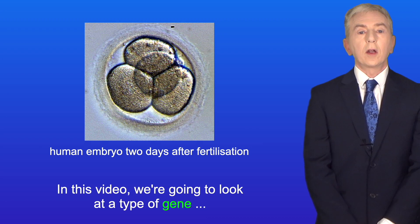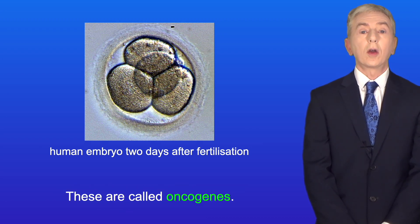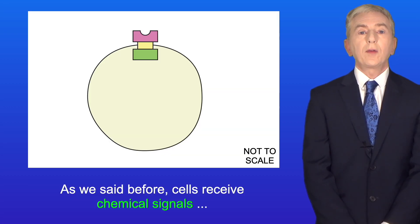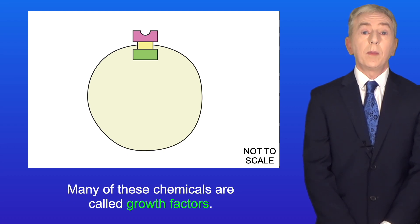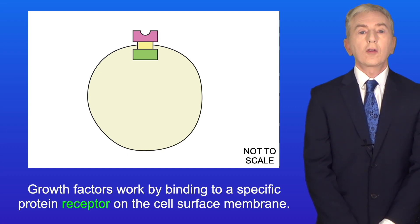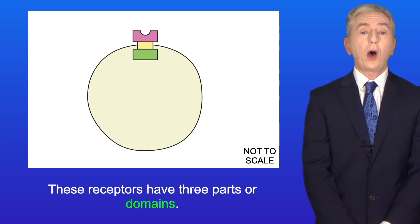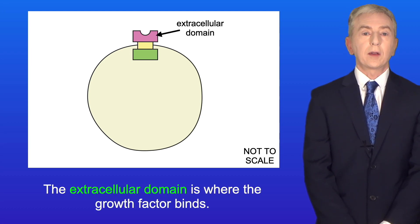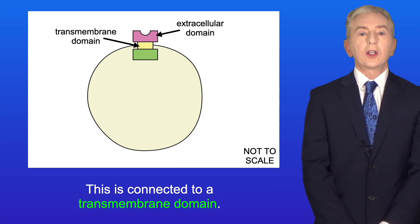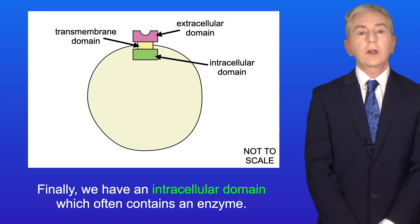In this video, we're going to look at a type of gene that plays a critical role in the development of cancer — these are called oncogenes. Cells receive chemical signals telling them to undergo mitosis; many of these chemicals are called growth factors. Growth factors work by binding to a specific protein receptor on the cell surface membrane. These receptors have three parts, or domains: the extracellular domain where the growth factor binds, a transmembrane domain, and finally an intracellular domain, which often contains an enzyme.